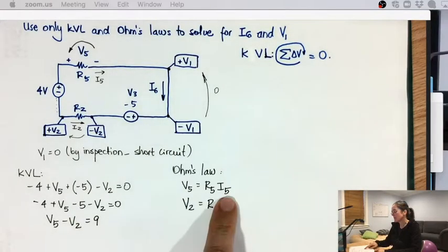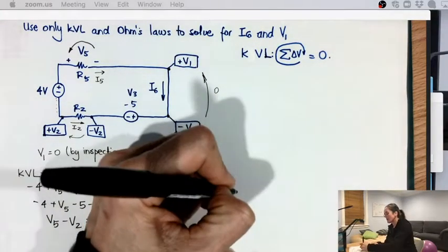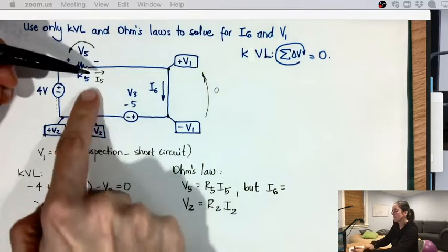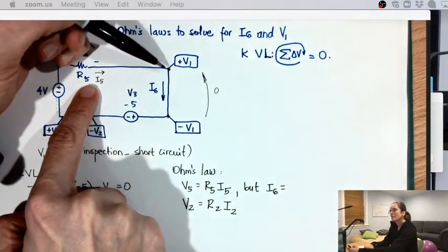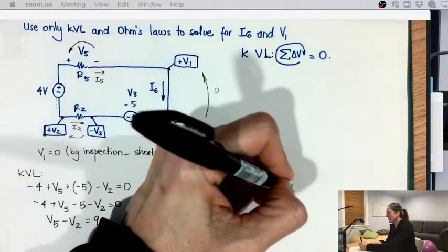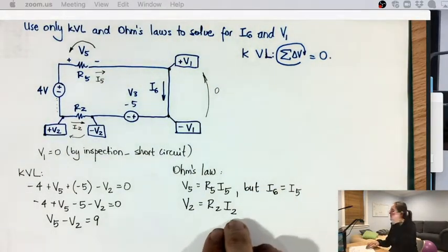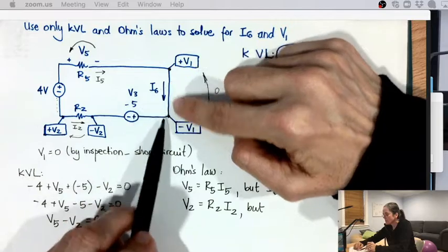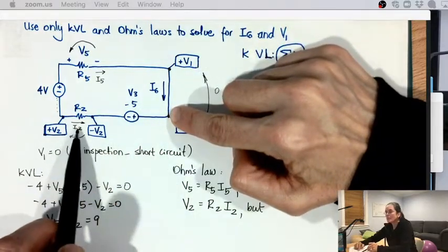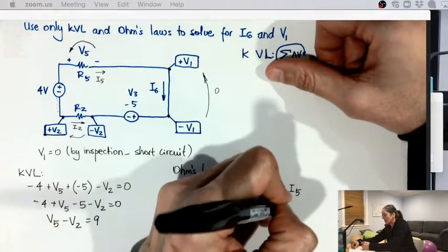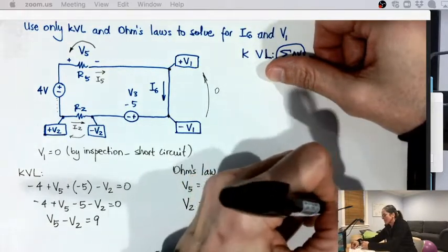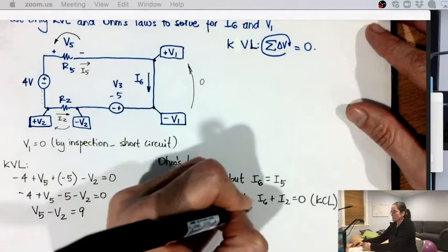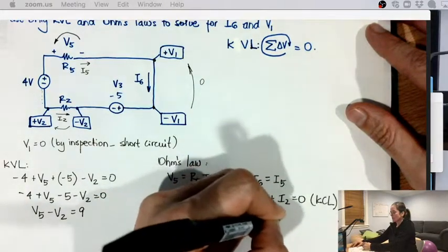Now what happens here is that I don't want I5 and I2. I want what is I5 as a function of I6. So I'm going to look at I5 here and you can even do KCL on this node, I5 equals I6. And now I want to do KCL on I2, or I want to do KCL on this node here. And you'll see that I6 plus I2 equals zero by KCL. So I2 is minus I6.